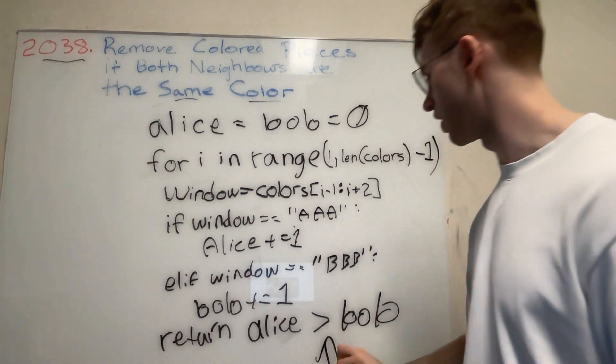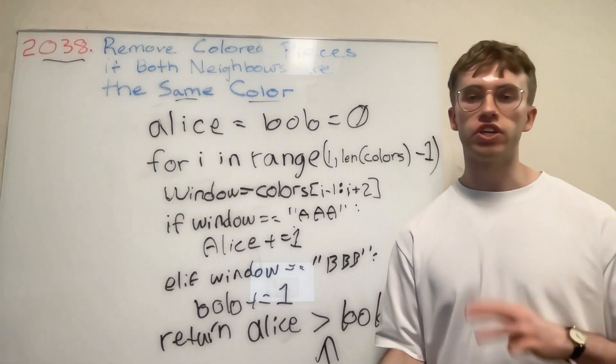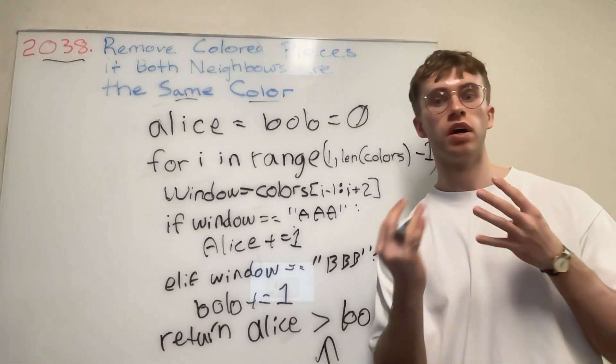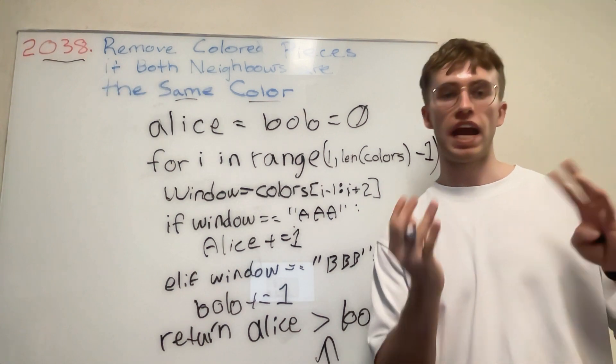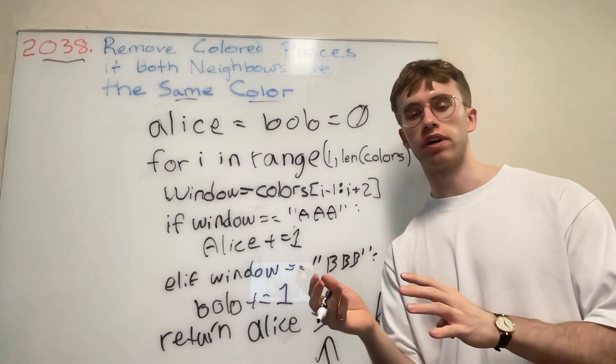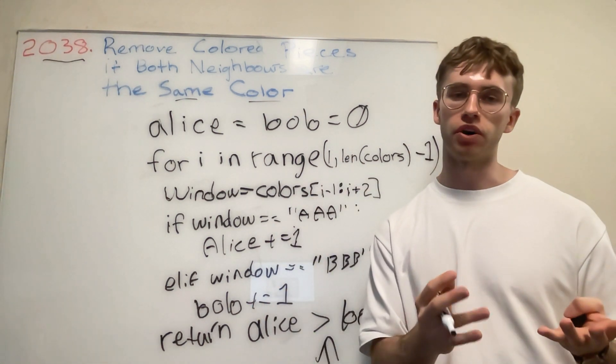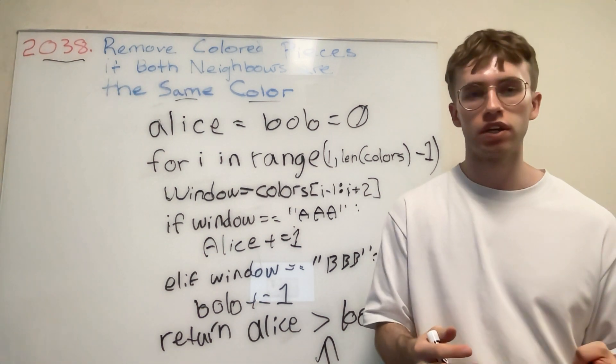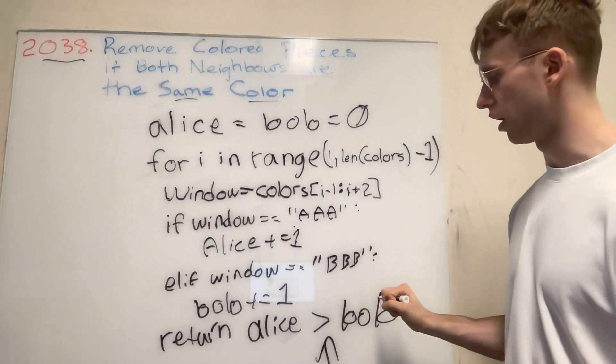All that we're going to have to do is basically just return at the end of this for loop. We're going to say return whether or not alice is greater than bob. One catch here is that it has to be strictly greater than. You can't say equals because Alice is playing first, it has to be strictly greater than Bob.